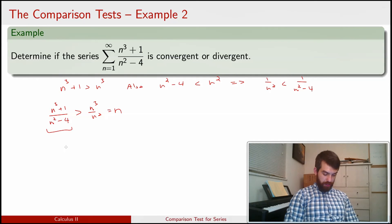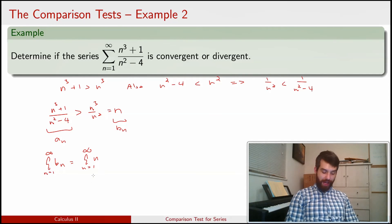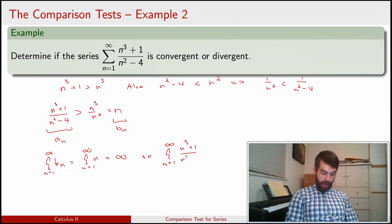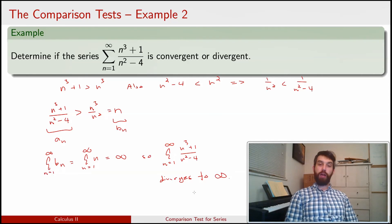So, if I again refer to the thing that I have as an, and the thing that I'm comparing it to as bn, well, the sum of n equals 1 to infinity of the bn's, this is just for sure going to be diverging. n equals 1 to infinity of n, this is like 1 plus 2 plus 3 plus 4 plus 5, this thing is going to be equal to infinity, it diverges, and so the original sum, the sum from 1 to infinity of n cubed plus 1, all divided by n squared minus 4, it also diverges, and it diverges to the same thing of positive infinity.